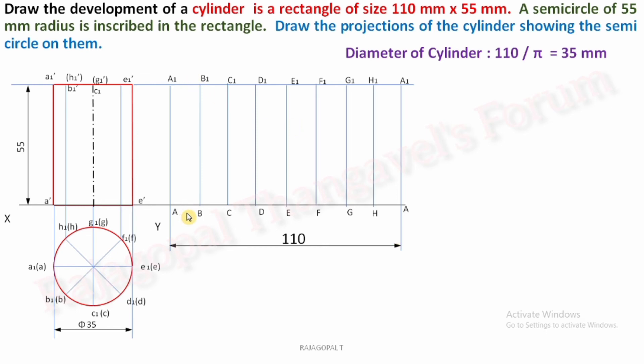Now what is the condition? Cylinder is a rectangle of size 110 and 55. Yes, this is 110, this is 55, we divided into eight divisions. Now how can we draw a semicircle? A semicircle of 55 mm radius is inscribed in the rectangle. Inscribed in the rectangle.